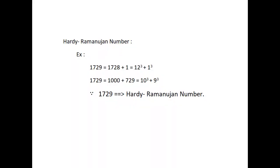First, we will see about Hardy-Ramanujan number. That is, the smallest number can be expressed as a sum of two cubes in two different ways.